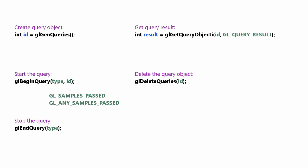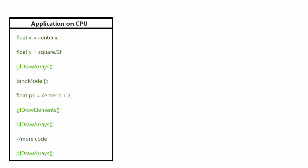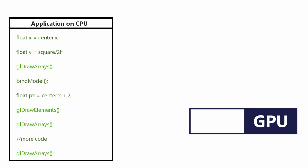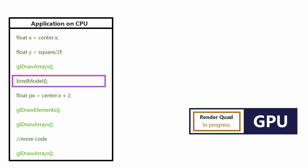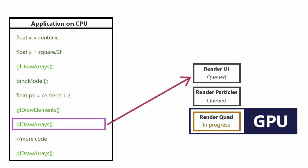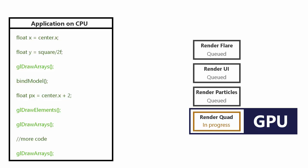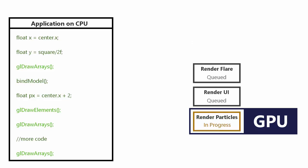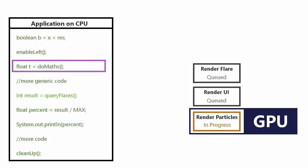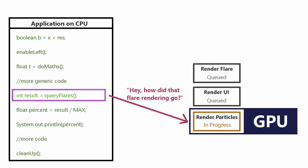There is one slight complication to consider: our application running on the CPU and the rendering processes on the GPU are not synchronized. When our application reaches a rendering call, it doesn't wait for the GPU to finish before moving on — it simply sends the command to the GPU and continues. The GPU queues up these commands as it receives them and carries them out in its own time. This is very good for performance because the CPU and GPU can work in parallel, and the GPU will pretty much always have work queued up, so it never has to wait for the next command. However, this is a problem when the CPU wants to query something happening on the GPU, because it might not have happened yet.